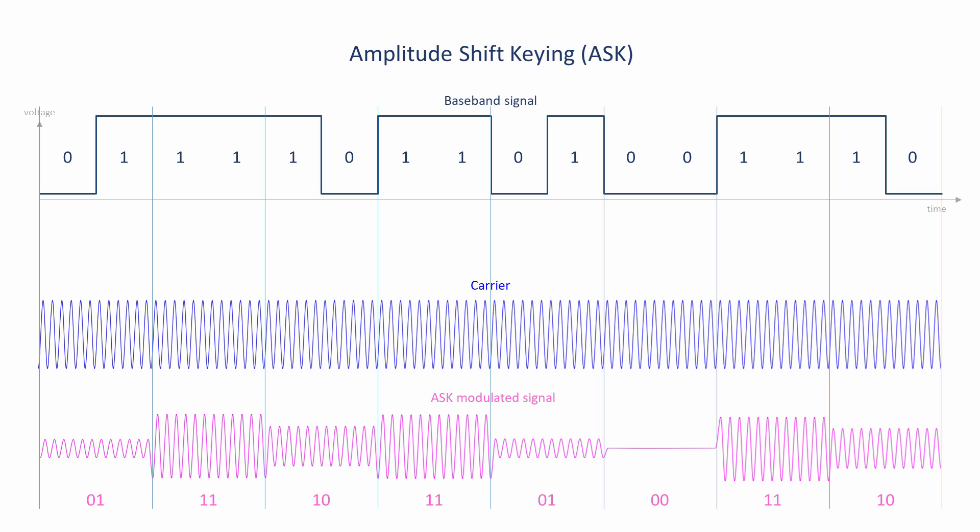Amplitude shift keying is already susceptible to amplitude variations due to external interference, so a high baud rate could make matters much worse.